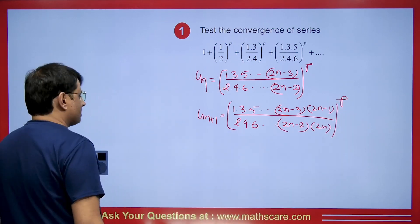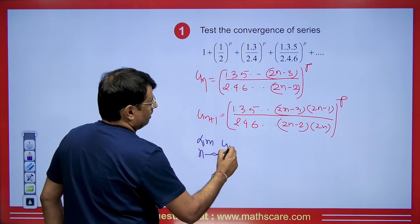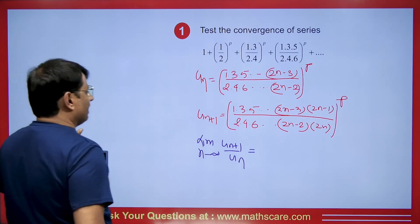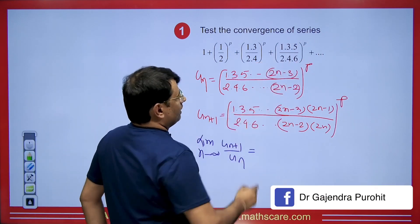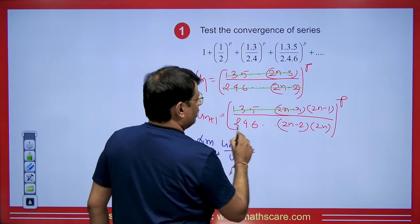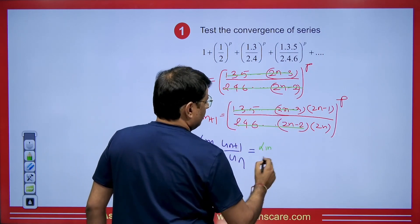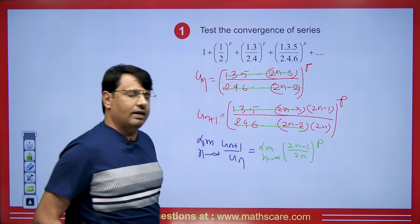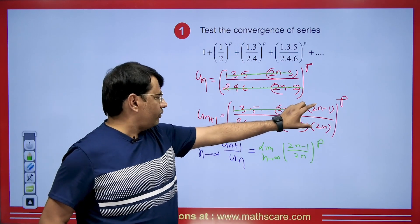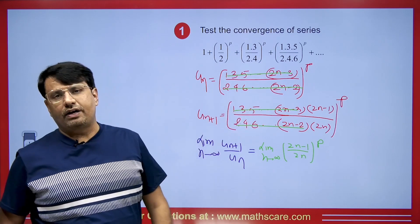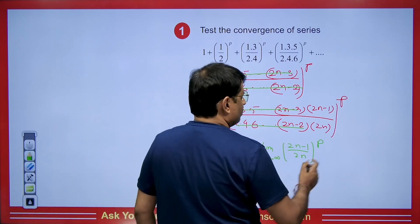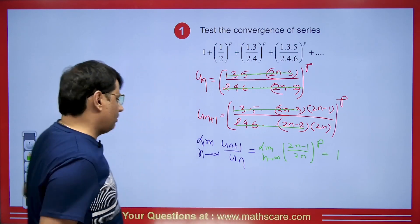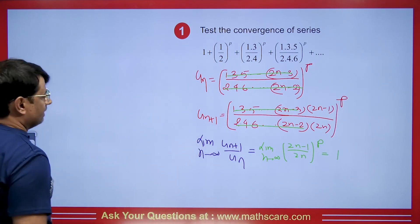We apply the D'Alembert ratio test: limit as n tends to infinity of u_{n+1}/u_n. Moving the total power p out, terms cancel leaving limit of (2n−1)/(2n) to the power p. Taking 2n common and applying n→∞, the value is 1. So the D'Alembert ratio test fails again, and we apply the Gauss test.